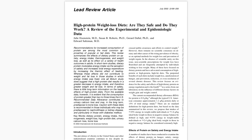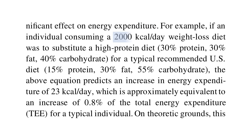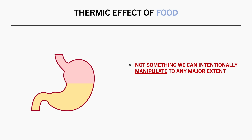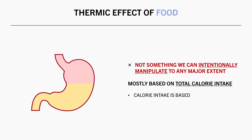However, the absolute amount of energy burned via the thermic effect of feeding is unlikely to be meaningfully altered by intentional diet strategies. For example, this study suggests that doubling protein intake from 15 to 30% of total calories during a 2000 calorie diet would increase the thermic effect of feeding by only 23 calories per day. So for the most part, the thermic effect of feeding is not something we can intentionally manipulate to any meaningful degree, and it is mostly based on how much food we eat.